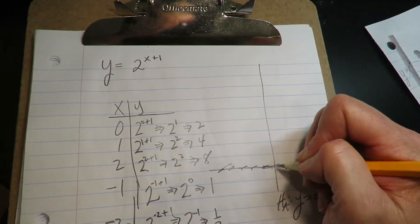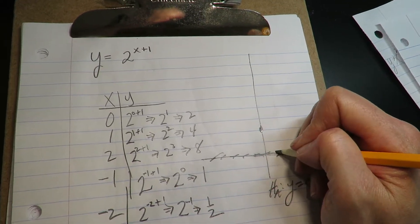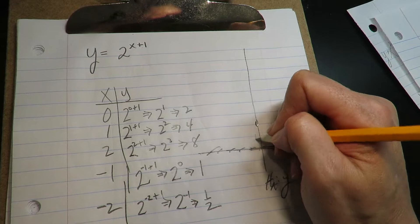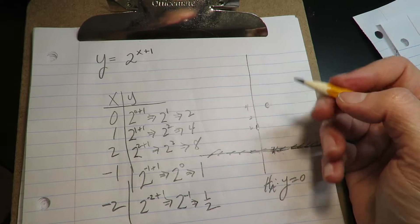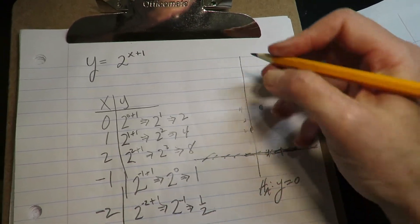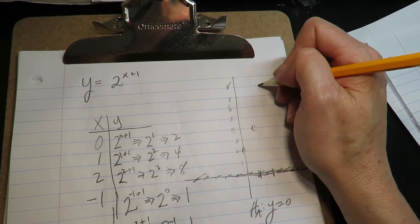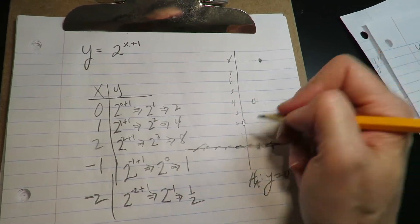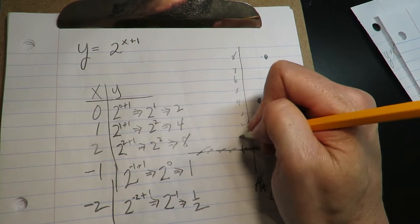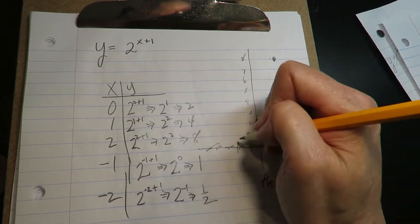All right, now let me plot some points. So at zero, we're at two. At one, we're at four. At two, we're at eight. At negative one, we're at one. At negative two, we're at a half.